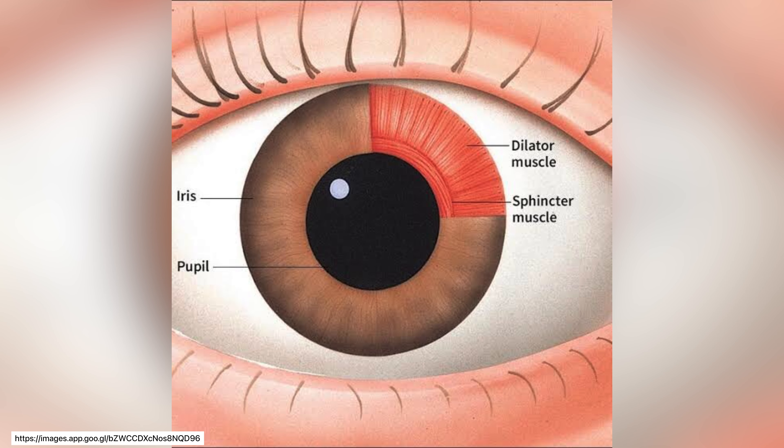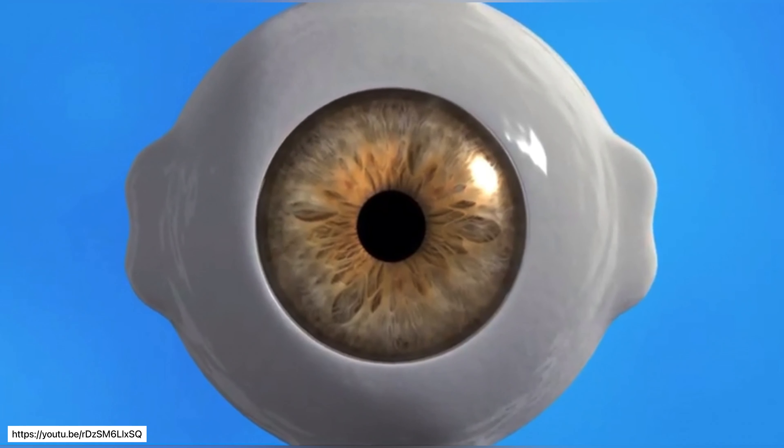And finally, we have the inferior oblique that rotates the cornea upward and laterally with the following origin and insertion. It is innervated by the oculomotor nerve.